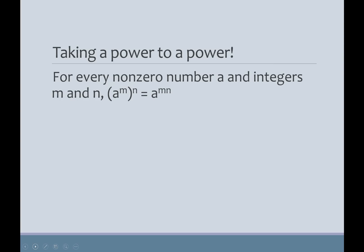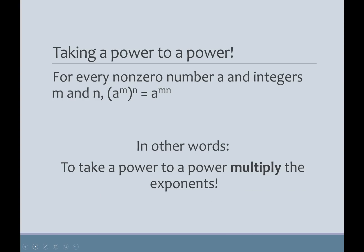So, what's that rule? It says, taking a power to a power. For every non-zero number A and integers M and N, this is the big bad math definition, A to the M to the N is A to the M N. So, in other words, we're going to take a power to a power, which is what this is, or an exponent to a power. We multiply the exponents. Keep the base the same, multiply the exponents.